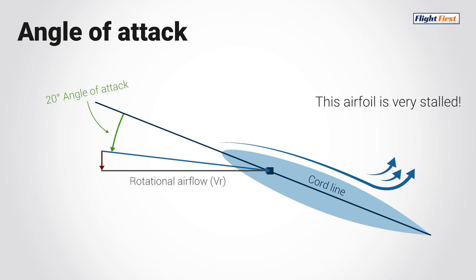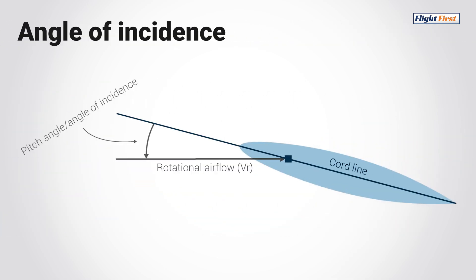The angle of incidence is also referred to as the pitch angle. It's the angular difference between the horizontal longitudinal axis and the chord line. The bigger the angle, the bigger the angle of incidence.